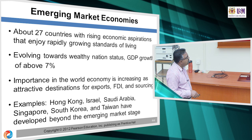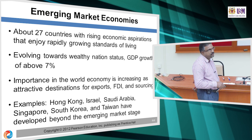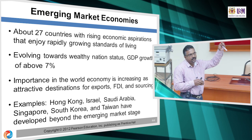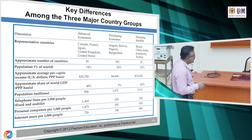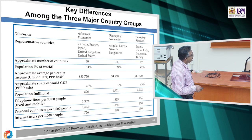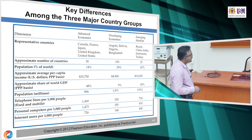Hong Kong, Israel, Saudi Arabia, Singapore, South Korea, and Taiwan have developed beyond the emerging market stage and are now developed nations. Some comparisons between advanced, developing, and emerging economies include: average per capita income, share of world GDP, population percentage, telephone lines per 1000 people, personal computers per 1000 people, and internet users per 1000 people.